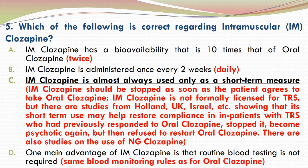IM clozapine is almost always used only as a short-term measure and should be stopped as soon as the patient agrees to take oral clozapine. IM clozapine is not formally licensed for treatment-resistant schizophrenia, but there are studies from Holland, UK, and Israel showing that short-term use of IM clozapine may help restore compliance in inpatients with treatment-resistant schizophrenia who had previously responded to oral clozapine, stopped it, became psychotic again, but then refused to restart oral clozapine. There are also studies on the use of nasogastric clozapine.